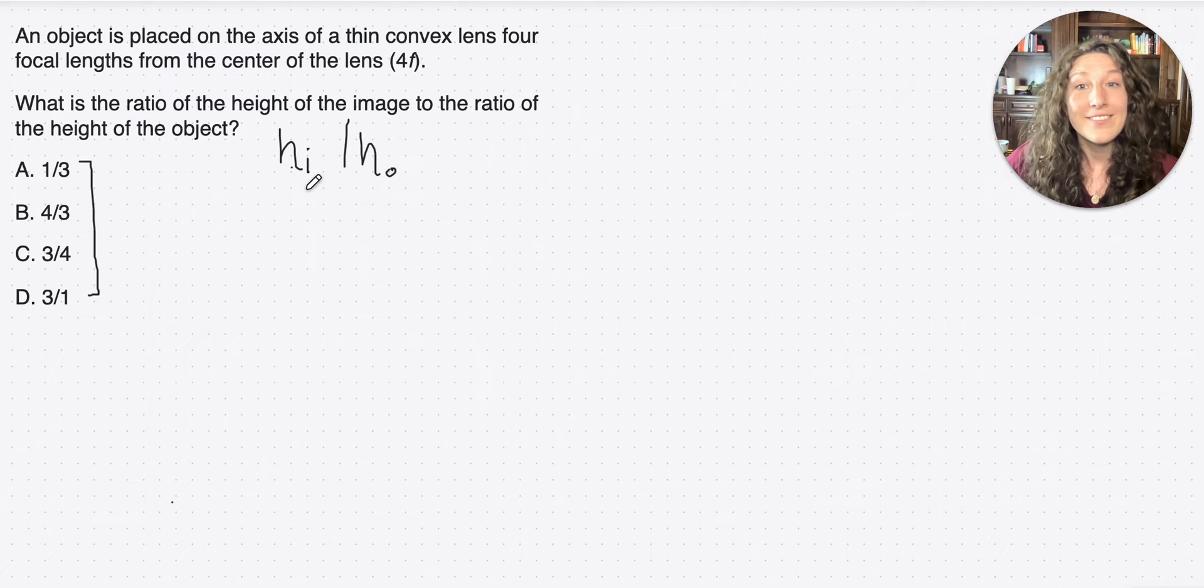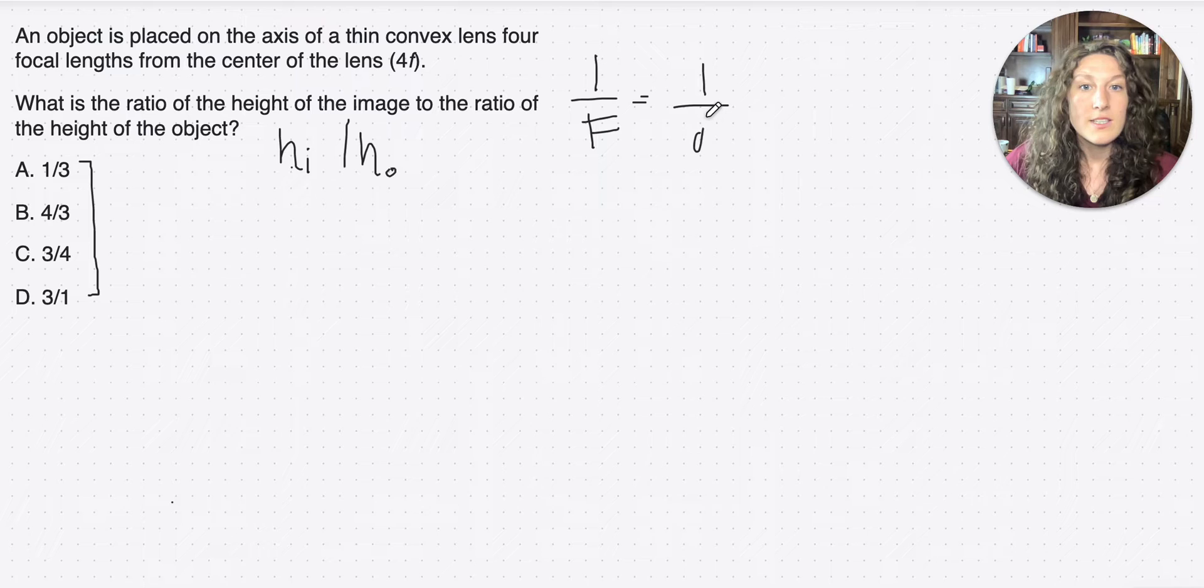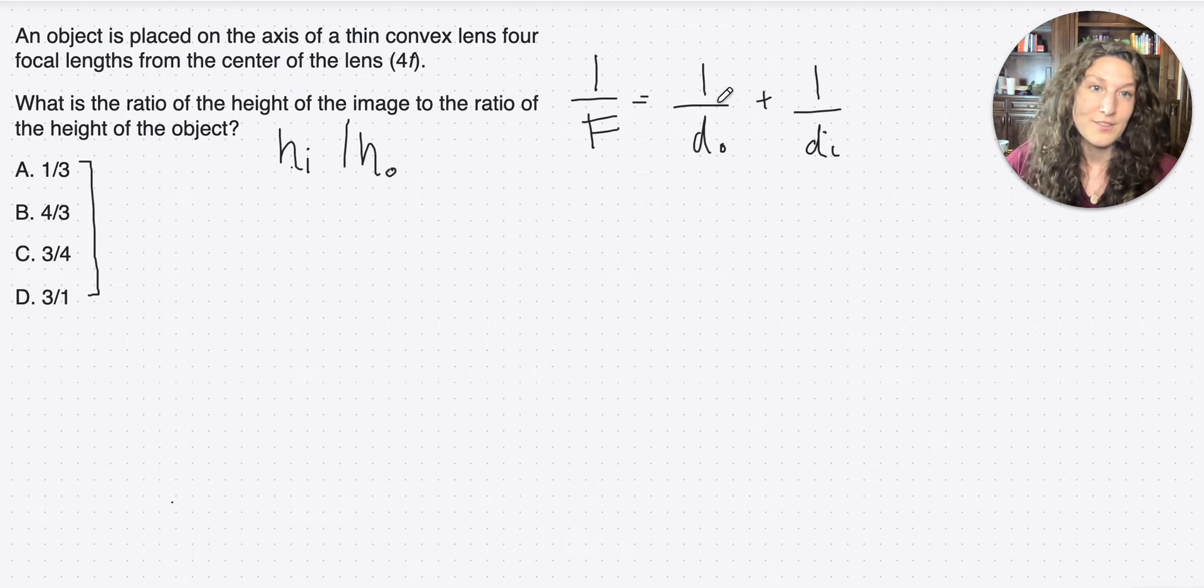So before we even get to height of the image and height of the object, we first need to find the distance of the image. And since we're in focal lengths here, we're kind of going to use algebra. We're going to use representations of numbers instead of actual numbers, and we're going to go ahead and do the equation that way. So let me show you what I mean. The equation is 1 over f, focal length, equals 1 over the distance to the object, plus 1 over the distance to the image from the center of the lens.